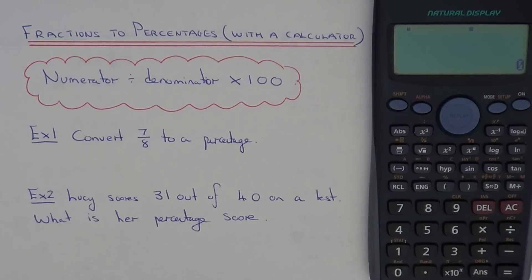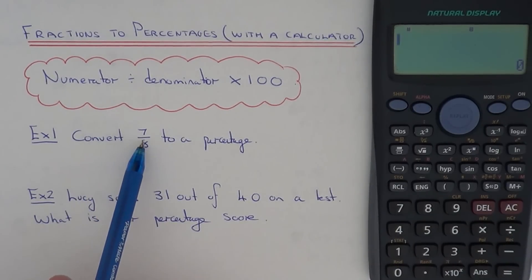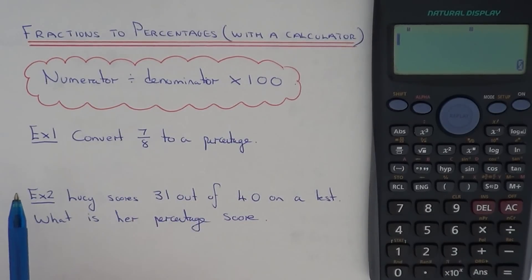Converting a fraction into a percentage when you have your calculator is actually quite easy to do because all you have to do is divide the numerator by the denominator and then multiply the answer by 100.